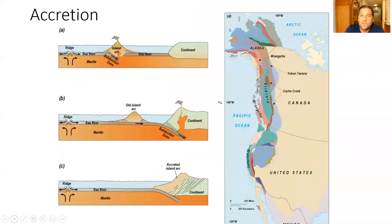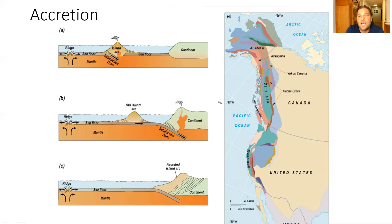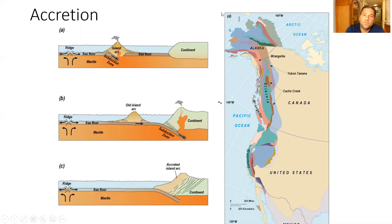Before we close out, I want to introduce the term accretion. Whenever there are ridges pushing islands, island arcs, and large plateau areas into continents, those features just get scraped off on the edge of a continent — and that is called accretion. That's a little bit about boundaries and some examples for you to look at. I hope you guys have a great day.